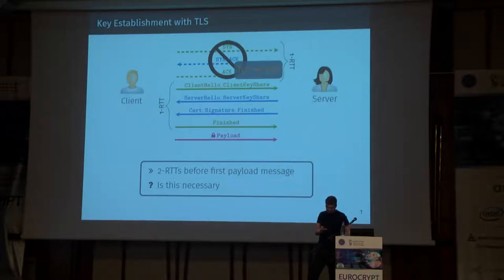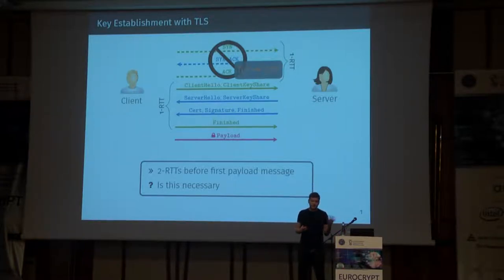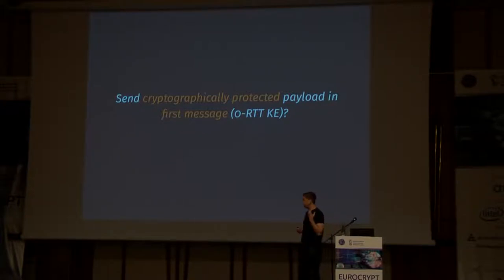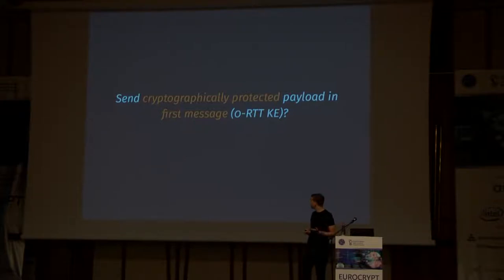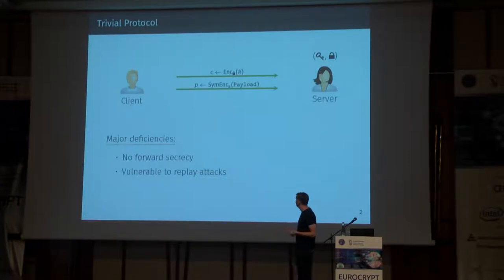One interesting question is how can we actually get rid of these messages which are needed to establish RTT, and what we want to do is somehow send encrypted data directly within the first message to a server — zero RTT. So this is what we refer to as zero RTT exchange, and zero RTT. So first, let's start with some kind of baseline protocol.